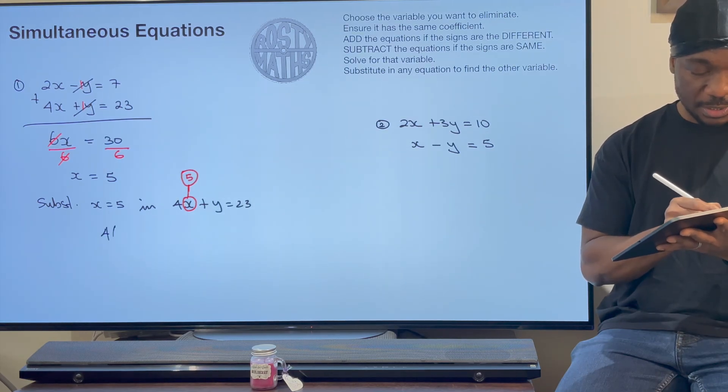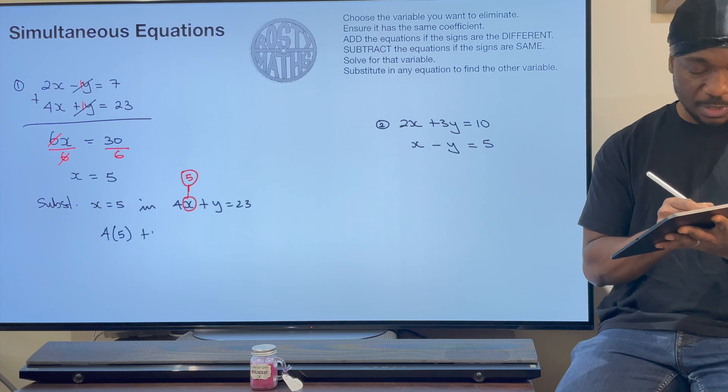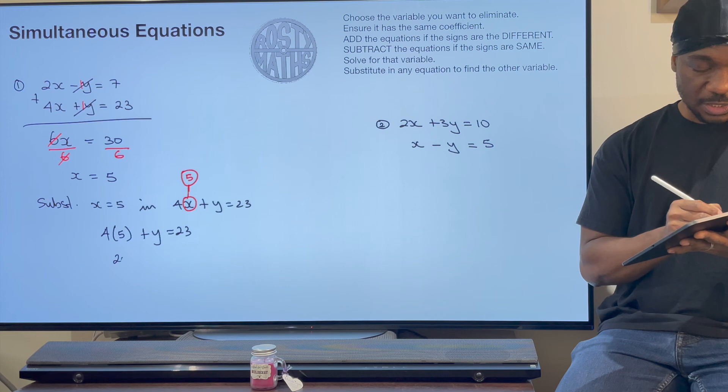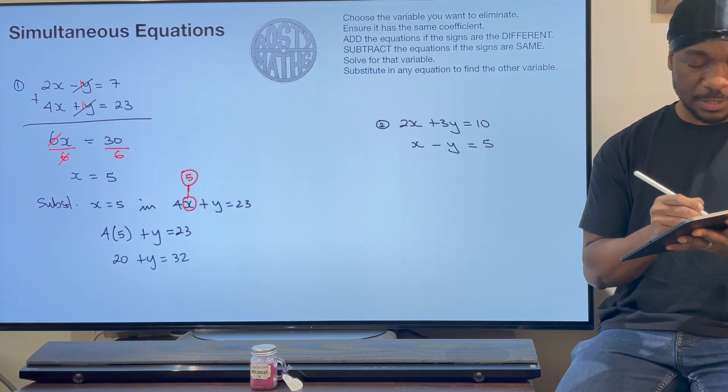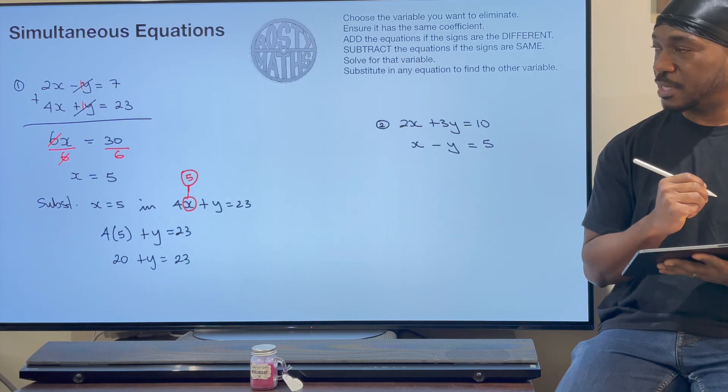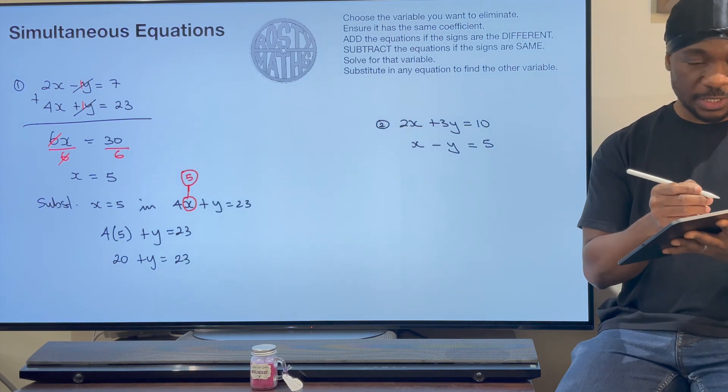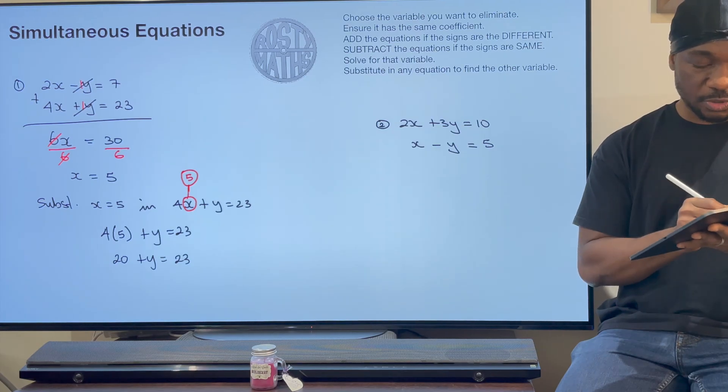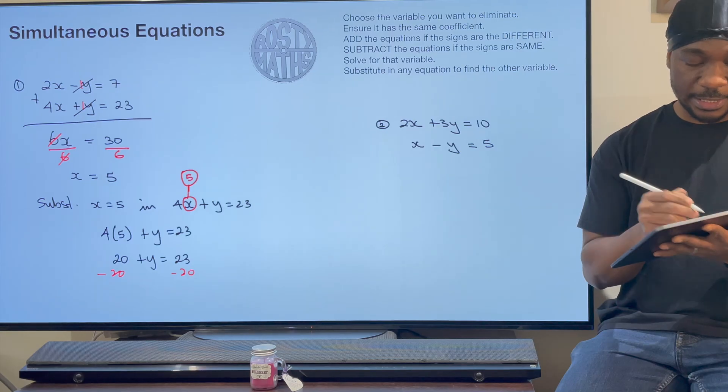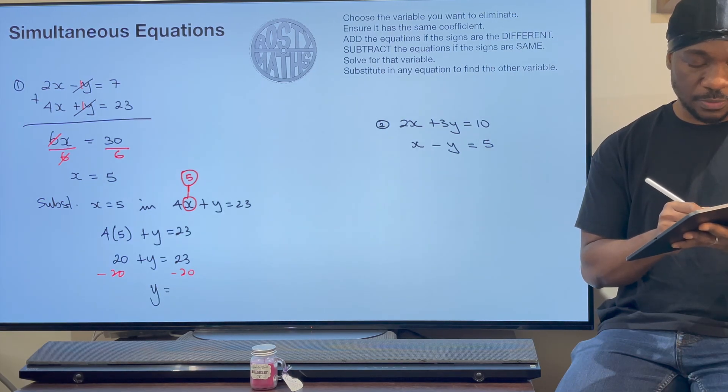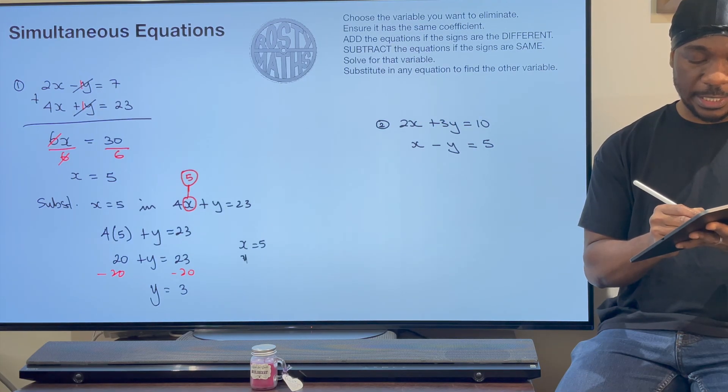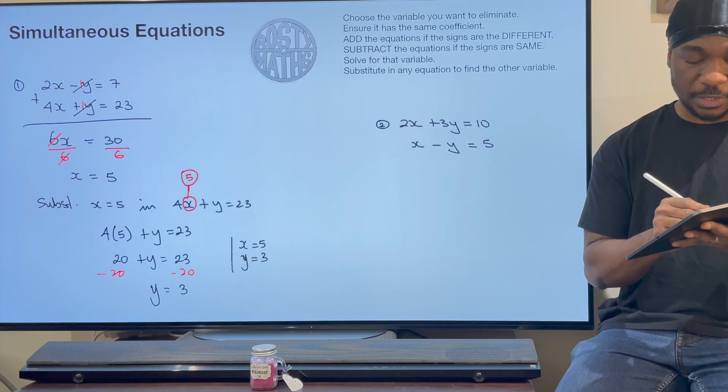Now that I know x is 5, I can replace this x here for the number 5. We're going to have 4 times 5 add y equals 23. 4 times 5 is 20. Add y equals 23. Then I will do my inverse operation. I will subtract 20 from both sides, thereby telling me that y is equal to 3. This is finished now. x is 5 when y is 3.